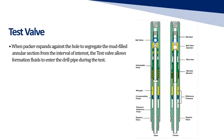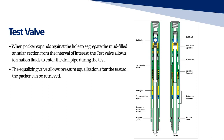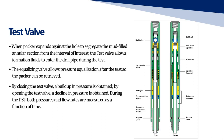Test valve: when the packer expands against the hole to segregate the mud-filled annular section from the interval of interest, the test valve allows formation fluids to enter the drill pipe during the test. The equalizing valve allows pressure equalization after the test so the packer can be retrieved. By closing the test valve, a build-up in pressure is obtained. By opening the test valve, a decline in pressure is obtained. During the DST, both pressures and flow rates are measured as a function of time.